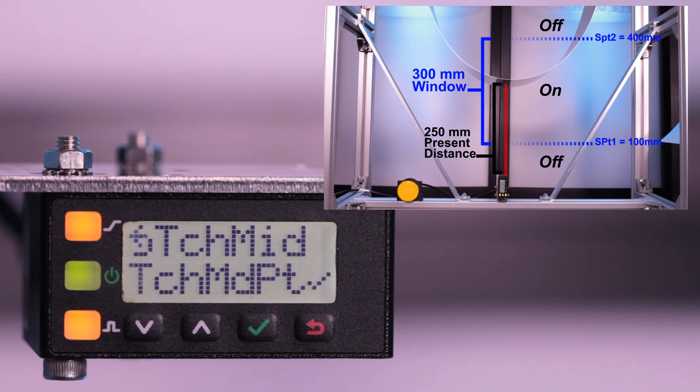In this case, a 300mm window was taught at 250mm, so the discrete output is from 100mm to 400mm.